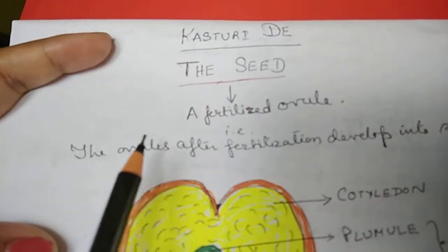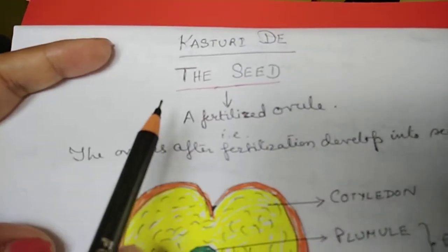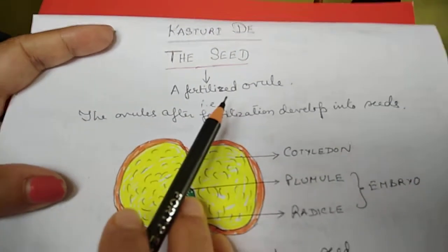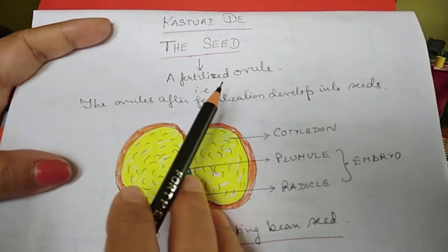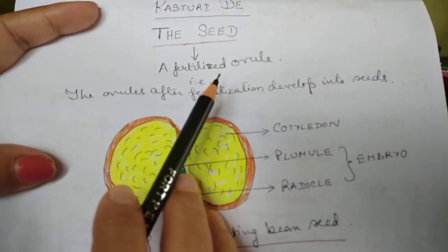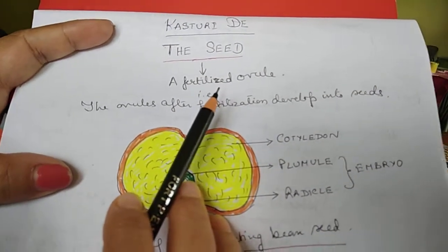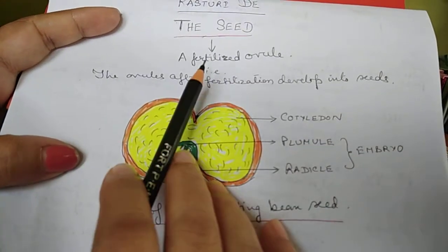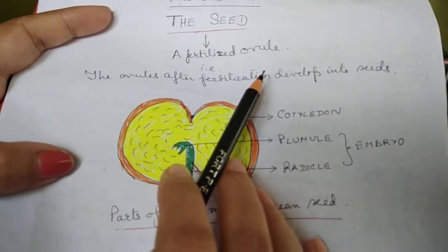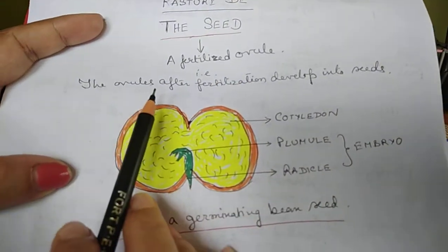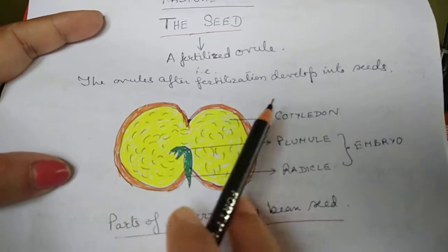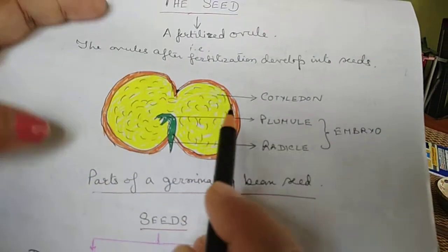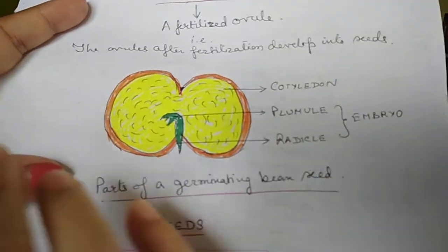I'm Kasturi Day, speaking on the topic 'The Seed' according to the ICC syllabus classics. What is a seed? It is a fertilized ovule. The ovules after fertilization develop into seeds.